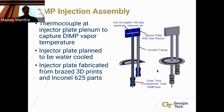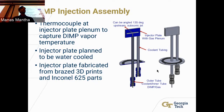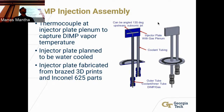There will be a thermocouple at the injector plate plenum to capture the DIMP vapor temperature. The injector plate is planned to be water-cooled to minimize heat losses, and it will be fabricated using braze 3D printing with Inconel 625 parts. The nozzle of the injector can be angled up to 135 degrees. One of our objectives is to vary that angle and the test section length to see how it changes the flow behavior, particle reaction, and the kinetics of the DIMP compound.